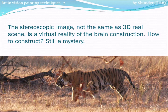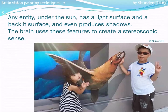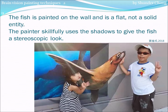How to construct? Still a mystery. Any entity, under the sun, has a light surface and a backlit surface, and even produces shadows. The brain uses these features to create a stereoscopic sense. The fish is painted on the wall and is flat, not a solid entity. The painter skillfully uses shadows to give the fish a stereoscopic look.